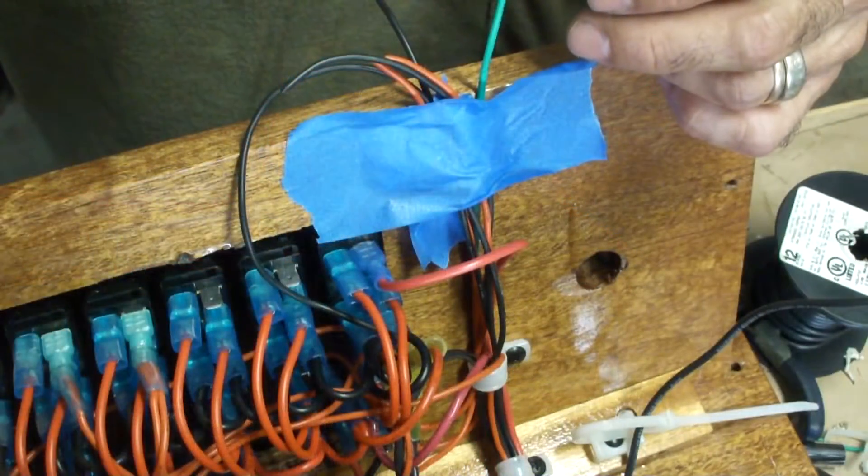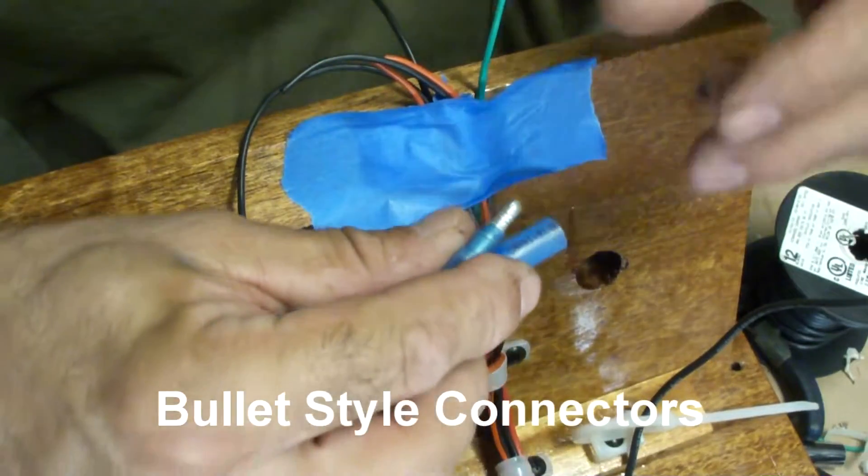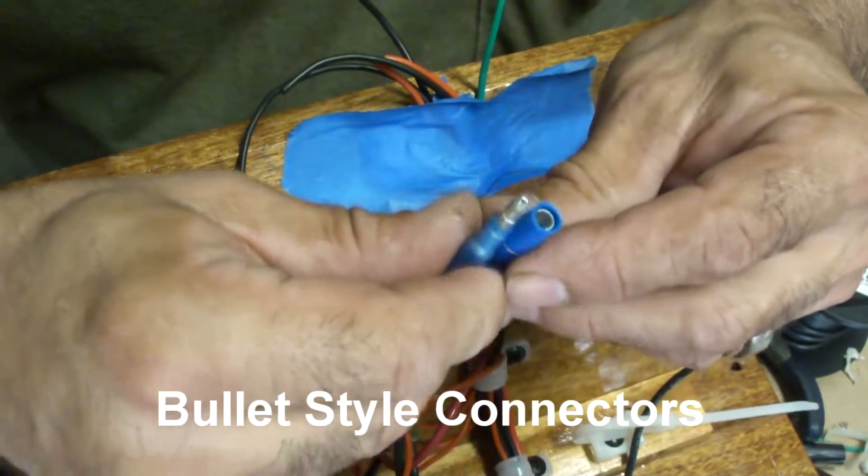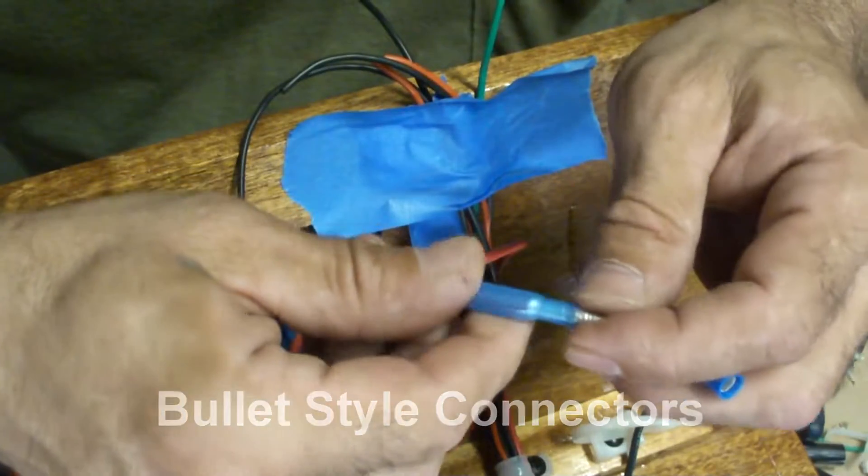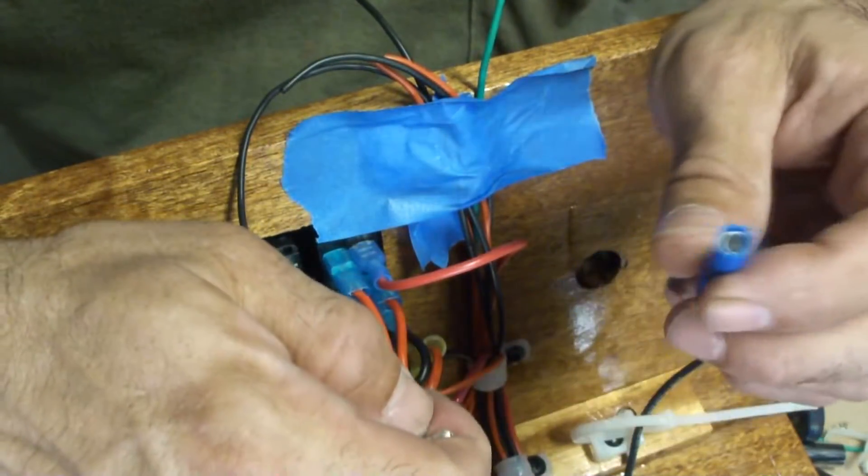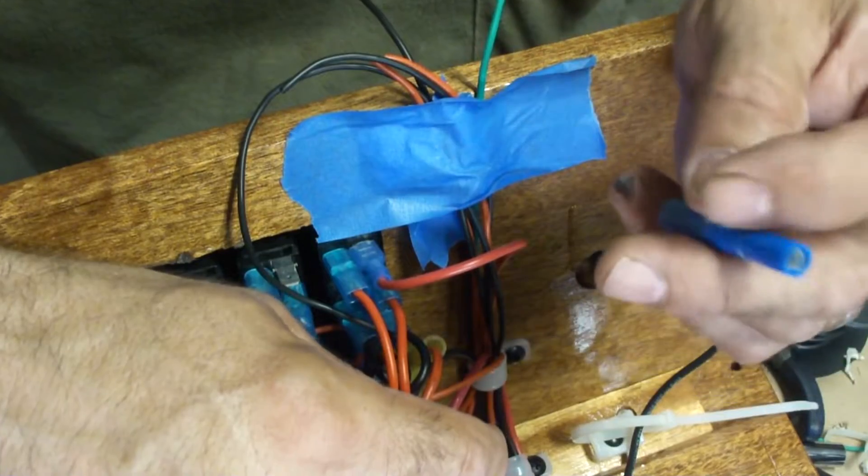And you can see the wiring coming together here. And here are some bullet connectors. These are pretty handy. I use these for the main power coming into the console from the battery. I'll use the male connectors on the console side because there should be no power here when it's disconnected.